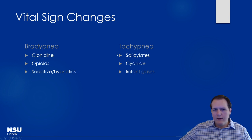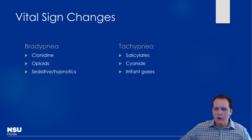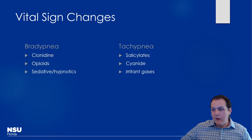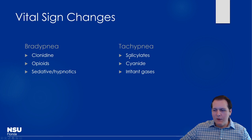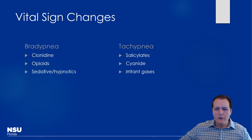Tachypnea is a really big one with salicylates — I use this frequently to assess aspirin exposures. We had a case where we suspected aspirin exposure but couldn't get a level for hours. Based on the patient's significant tachypnea, we got an ABG instead and saw respiratory alkalosis, which gave us the sign that there was enough salicylate to warrant treatment. We went ahead and initiated proper treatment.